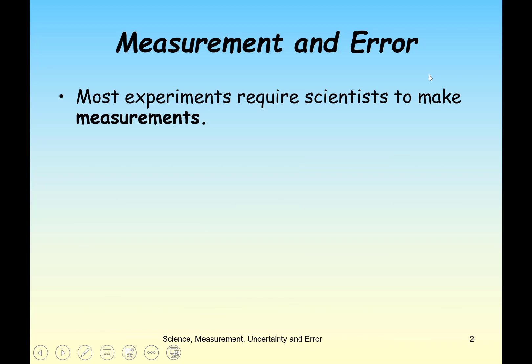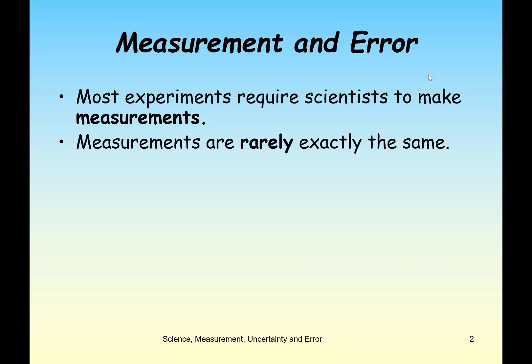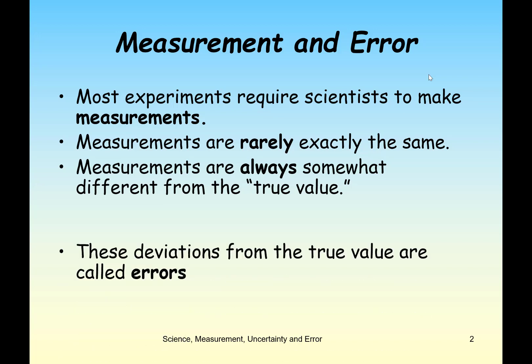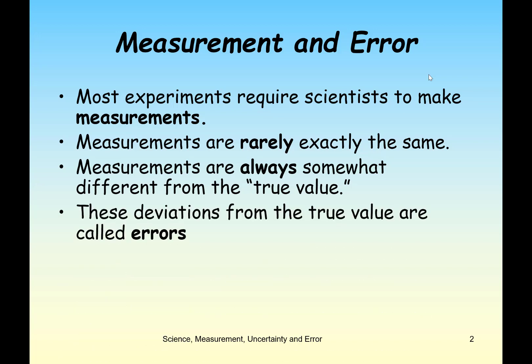Pretty much every experiment we do requires scientists to make measurements. Measurements are rarely going to be exactly the same, even if we do a repeated trial, and measurements are always going to differ from the true value — at least somewhat from the true thing we're trying to measure. These deviations from the true value are called errors.